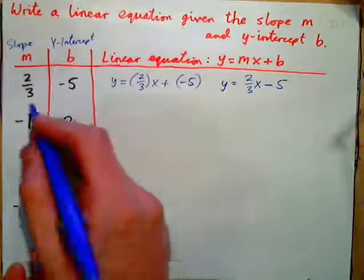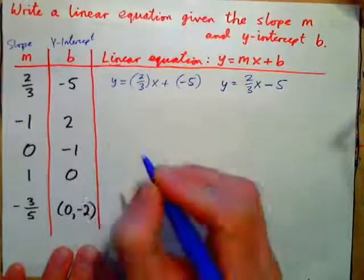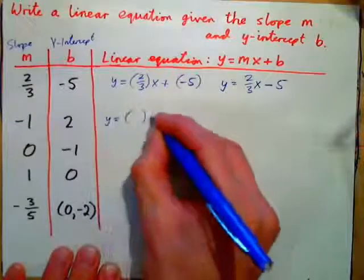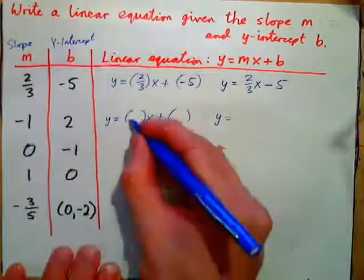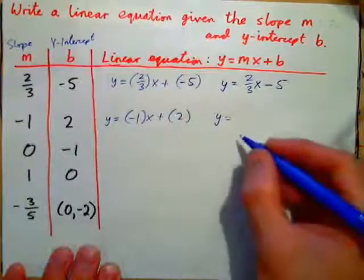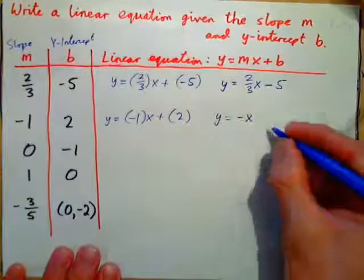Do this one now. If the slope is negative 1, the y-intercept is 2, that would be y equals the slope times x plus the y-intercept. So the slope is negative 1, y-intercept is 2, so we'd have y equals negative 1x, or negative x, plus 2.